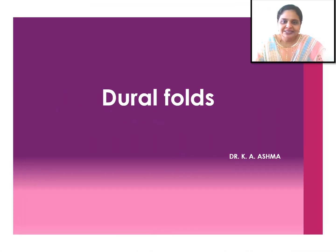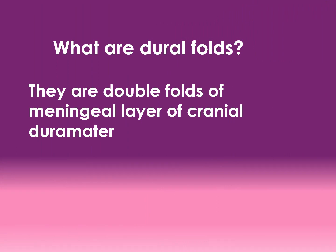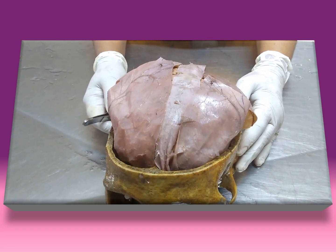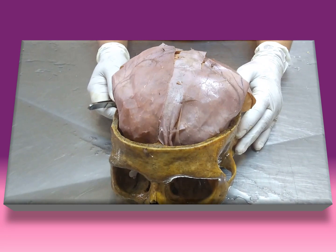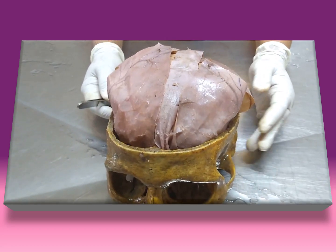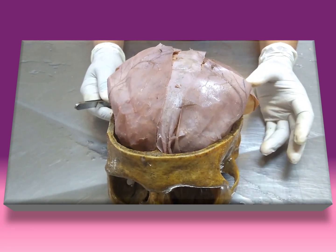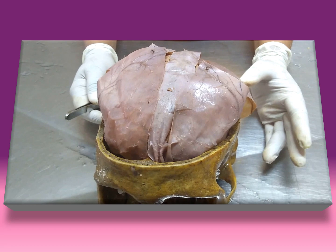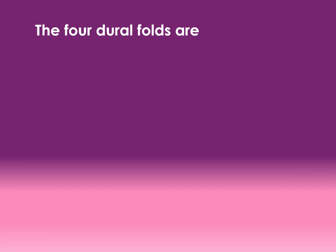Good morning, I am Dr. Ashma and in this video we will be seeing the gross anatomy of dural folds. Dural folds are double folds of meningeal layer of cranial dura mater. The cranial dura has two layers: the outer endosteal layer and the inner meningeal layer. This inner meningeal layer is thrown into double folds in some places, forming dural folds. There are four dural folds.